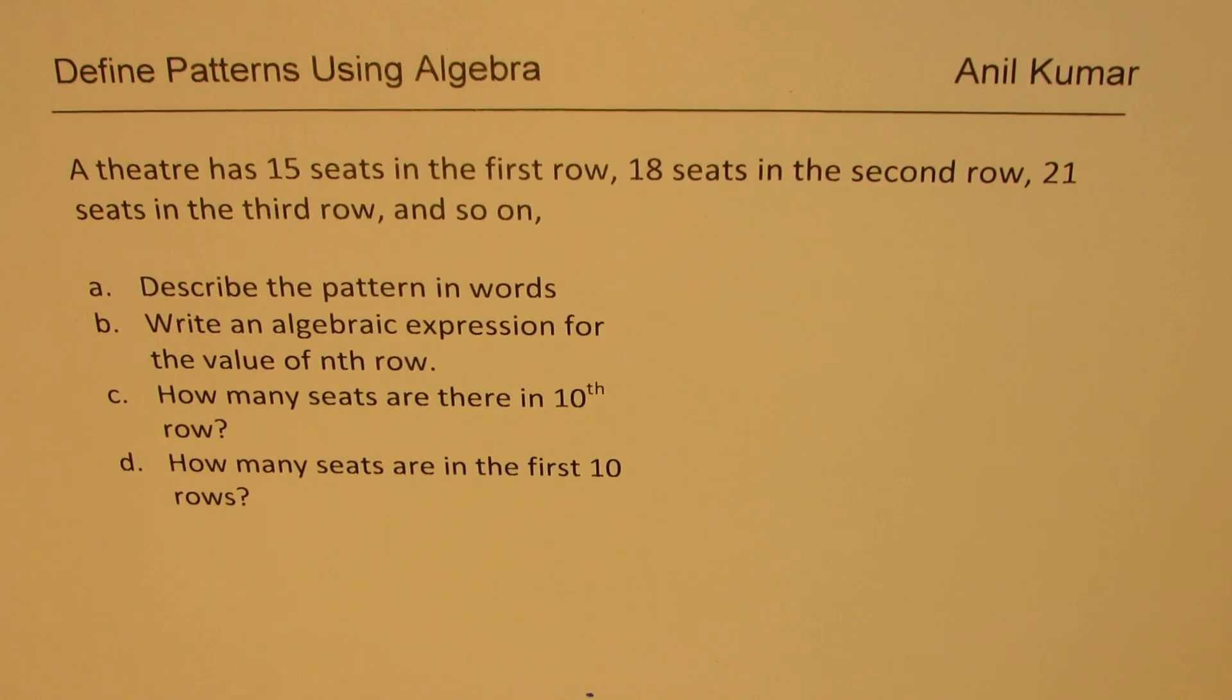The question here is: a theater has 15 seats in the first row, 18 seats in the second row, 21 seats in the third row, and so on. Part A: Describe the pattern in words. Part B: Write an algebraic expression for the value of nth row. Part C: How many seats are there in the tenth row? Part D: How many seats are in the first ten rows? So you can pause the video, answer this question, and then look into my suggestions.